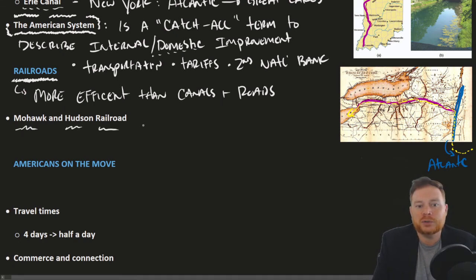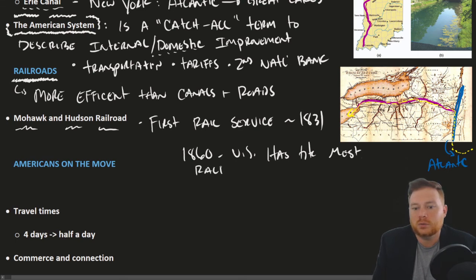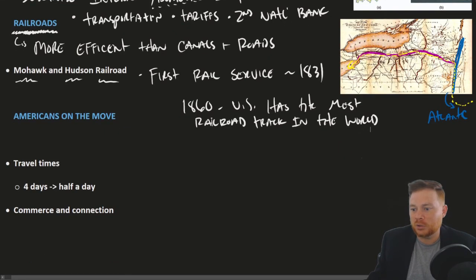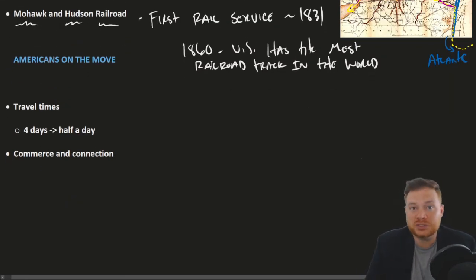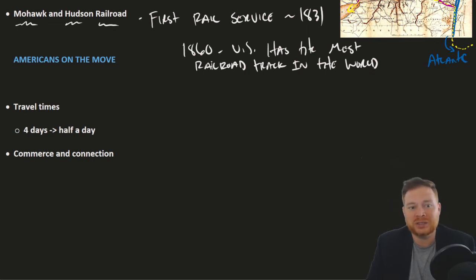The Mohawk and Hudson Railroad Company established the first rail service, approximately 1831. By 1860, the U.S. had the most railroad track in the world. It's not just that the United States made a lot of improvements in transportation relative to itself — even compared to the rest of the world, the United States had more railroad mileage than the rest of the world put together. When it came to transporting goods, there really is no other way that matches the railroad in this era.